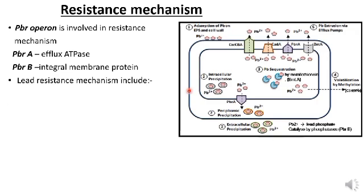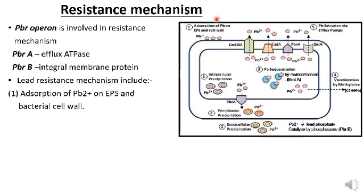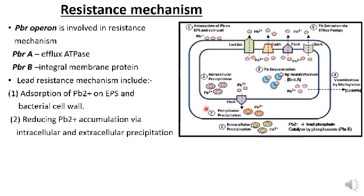Resistance mechanism to lead includes five basic processes. The first one is the adsorption of lead on EPS and on the bacterial cell wall. The cell wall and extracellular polymers adsorb lead due to the presence of negatively charged functional groups such as carboxyl, hydroxyl, or phosphate groups. The second one is reducing lead accumulation via intracellular and extracellular precipitation.